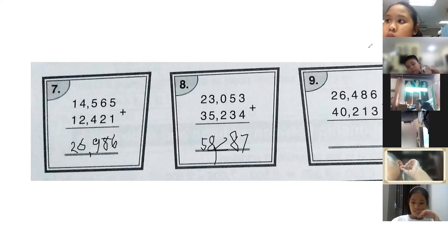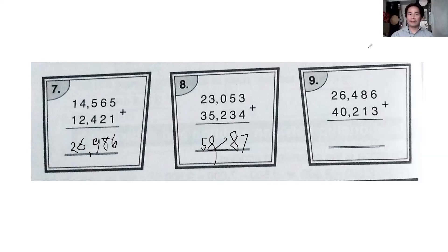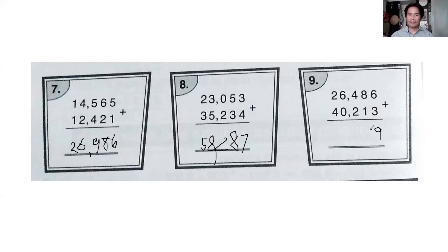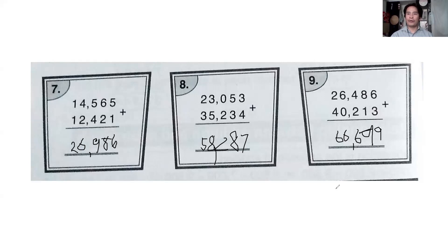Number nine — Learn. Six plus three equals nine. Eight plus one equals nine. Four plus three equals six — wait, four plus three is not six, it's seven. Six plus zero equals six. Two plus four equals six. Very good — turn off your microphone. These are all correct.